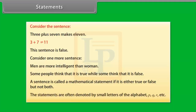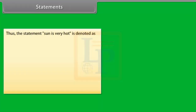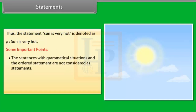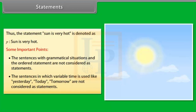Statements are often denoted by small letters of the alphabet: p, q, r, etc. For example, the statement 'Sun is very hot' is denoted as p. Some important points: sentences with grammatical ambiguity and ordered statements are not considered as statements. Sentences in which variable time is used, like yesterday, today, or tomorrow, are not considered as statements.